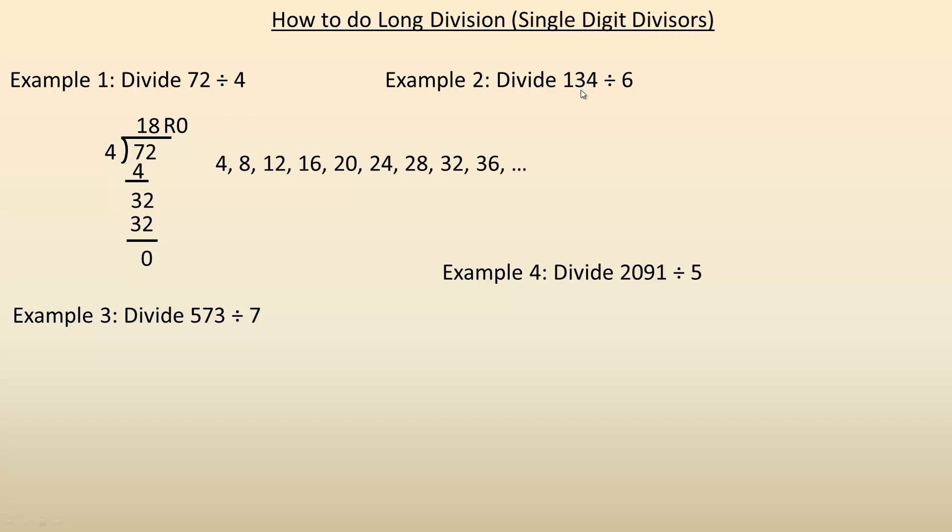In the second one, we're dividing 134 by 6, so 134 goes in here and 6 goes to the left. The first thing you do is ask yourself, how many times does 6 go into the 1? So write out the first few multiples of 6. And you see, 6 doesn't go into 1 even once because 1 is smaller than 6.